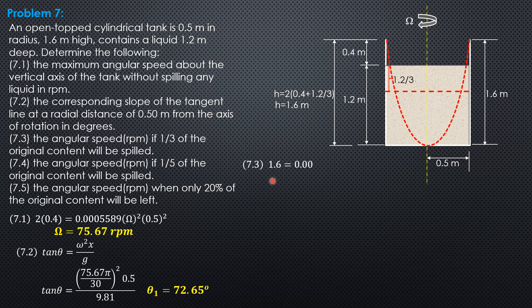So 1.6 equals 0.0005589 omega square 0.5 square. So for this situation, the angular speed is equal to 107.0 revolutions per minute.